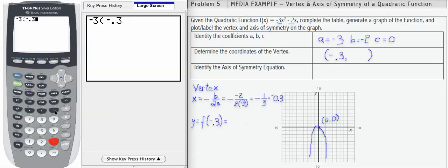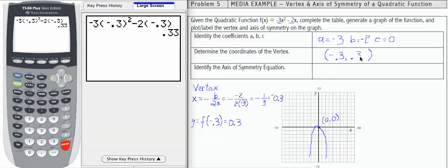Negative 0.3, and then enter. So we get 0.33. I'm going to go ahead and round that to 0.3 just to keep it in line with our first result. That is the y value of our vertex. And up here in my ordered pair, I'm just going to put 0.3.